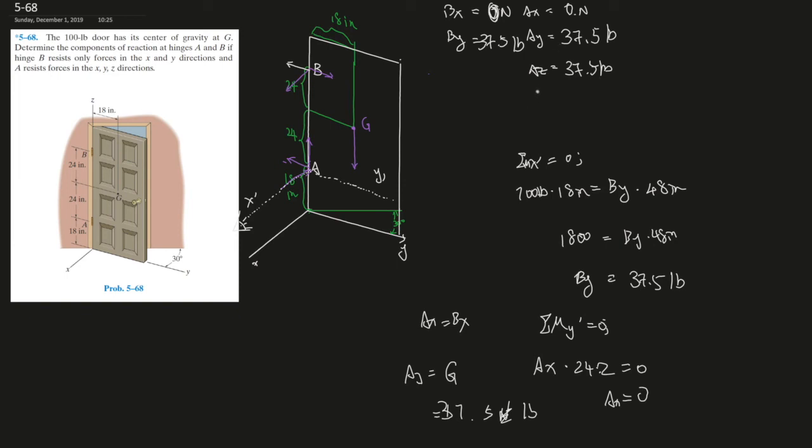Ay and By equals the same. Ay is the same as By, so that's 37.5. And Az, sorry for one second my brain went to 2D and I forgot Az.